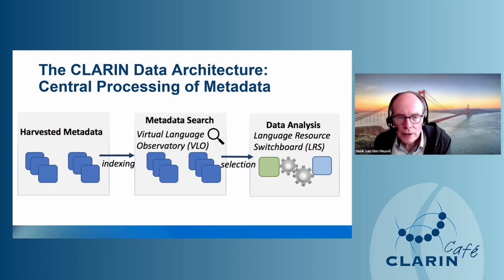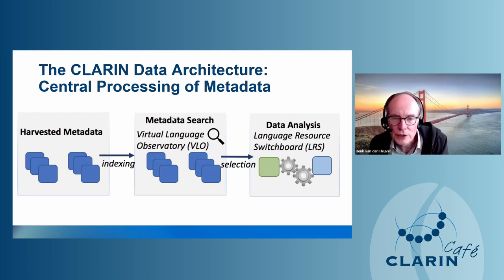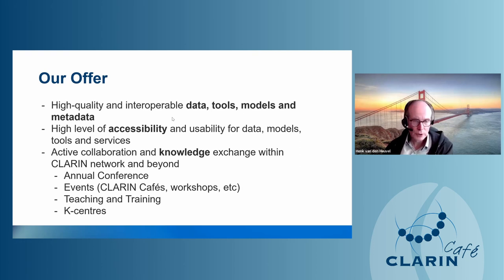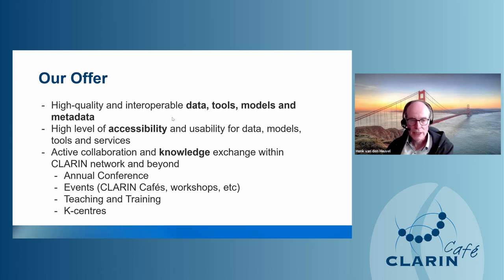There are B centers providing data, C centers providing metadata, and K centers providing knowledge to the infrastructure. The architecture involves metadata about resources harvested into the Virtual Language Observatory, from which language resources can be used for data analysis on the Switchboard. CLARIN offers high-quality, interoperable data, tools, models, and metadata, with active community collaboration. We offer an annual conference — the next one in Barcelona in October — plus CLARIN Cafés, workshops, teaching, training, and knowledge centers.